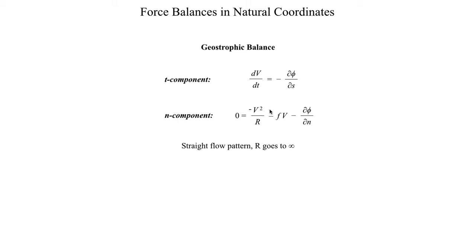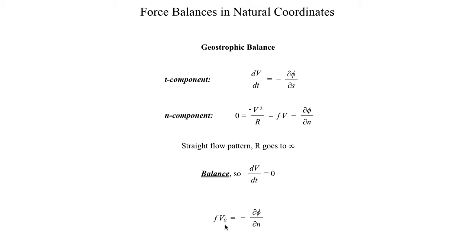We have negative V squared divided by infinity, which is a term that goes to zero. So we're left with only the Coriolis force in the n-hat direction — perpendicular to the parcel's motion — and the pressure gradient force perpendicular to the parcel's motion. Since it's by definition a balance, dV/dt equals zero, which means the term dφ/ds, the pressure gradient force acting in the same direction as the parcel's motion, must also be zero. This simplifies to: F times V_G equals the pressure gradient force acting perpendicular to the geostrophic wind.